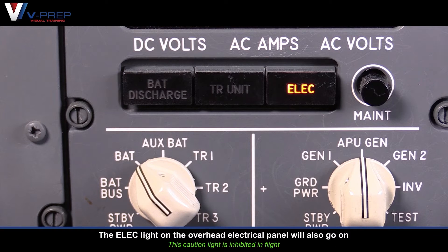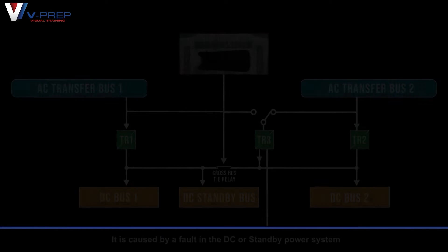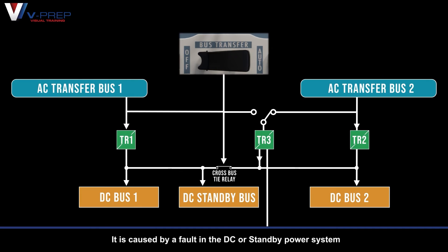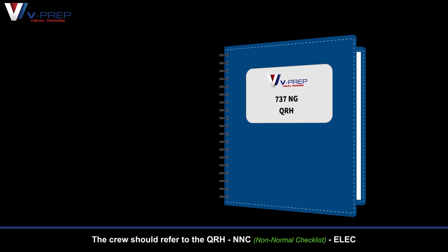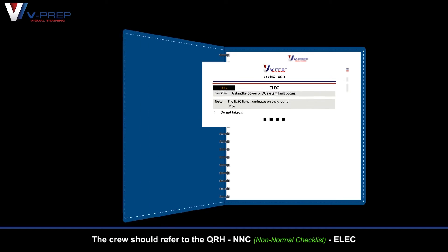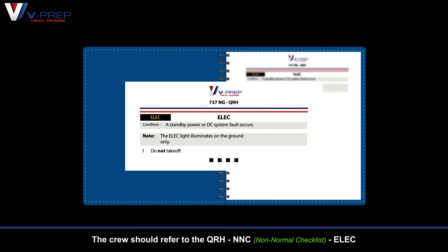The electrical light on the overhead electrical panel will also illuminate. It is caused by a fault in the DC or standby power system. The crew should refer to the QRH NNC electrical.